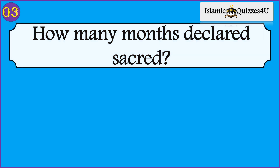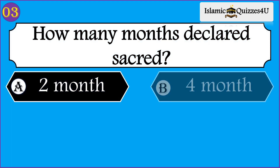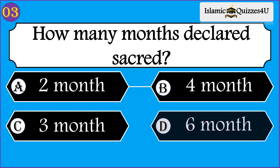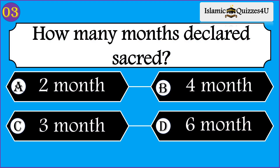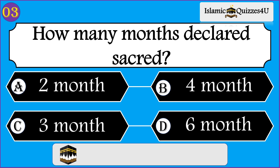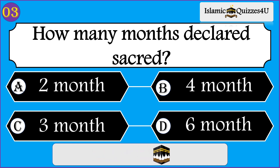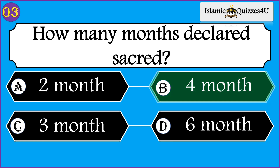Question number three: How many months are declared sacred? Option A: two months. Option B: four months. Option C: three months. Option D: six months. Correct option is four months.